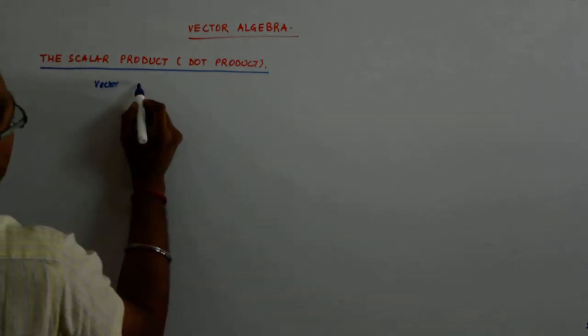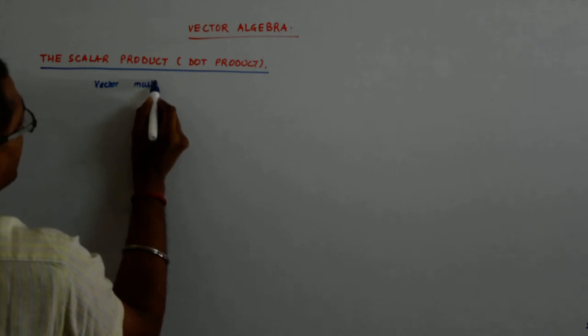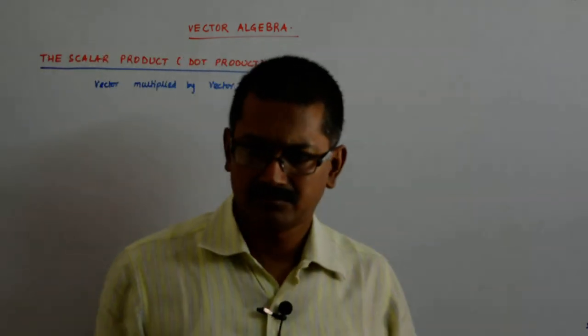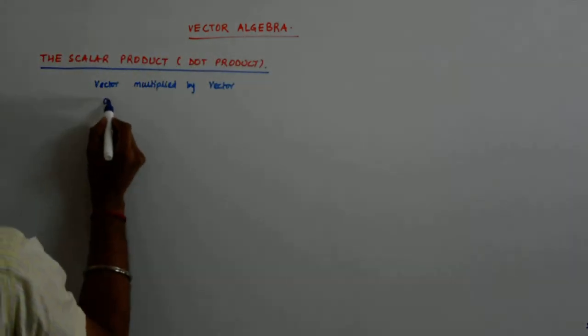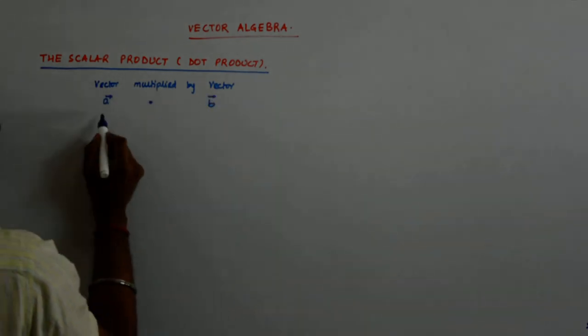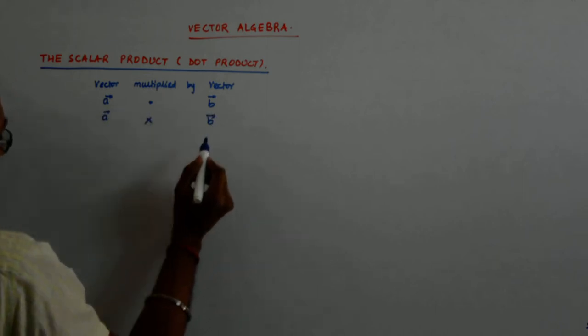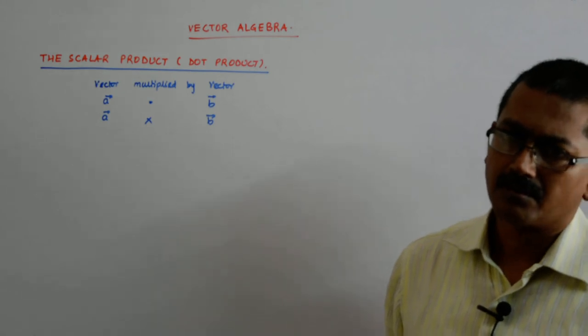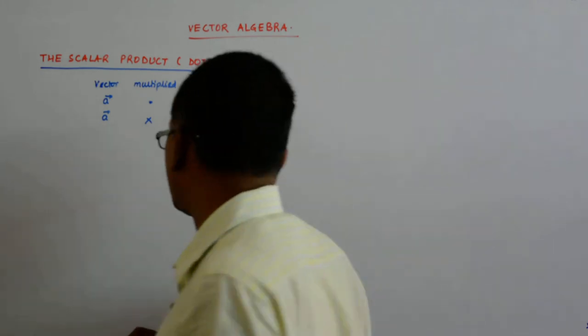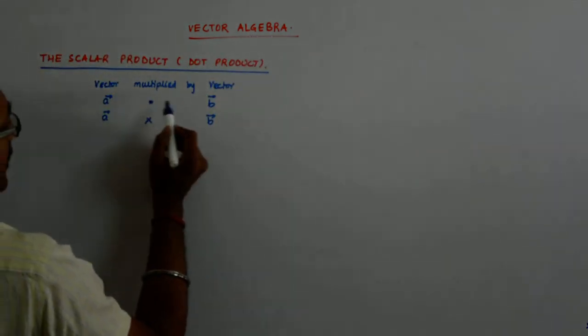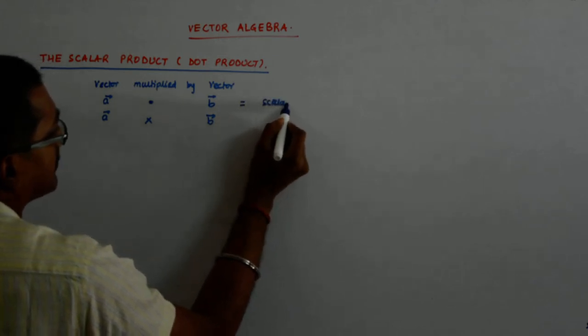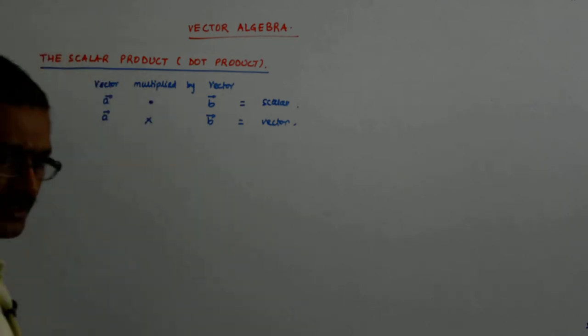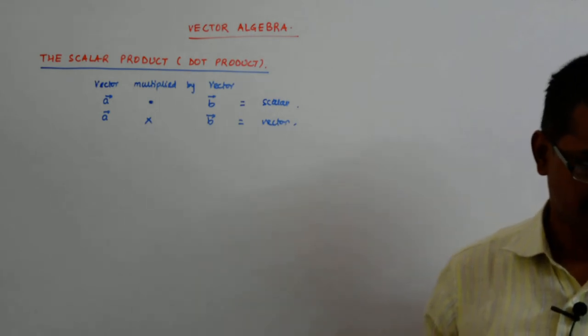Vector, when multiplied by a vector, a vector multiplied by vector can be done in two ways. One is the dot product, another is the cross product. This is the dot product, this is the cross product. The dot product resultant is actually a scalar and here the resultant is a vector. That is why this is also called a scalar product and the cross product is called a vector product.